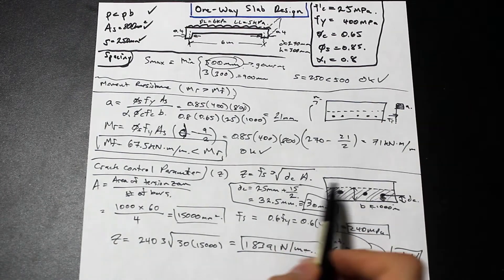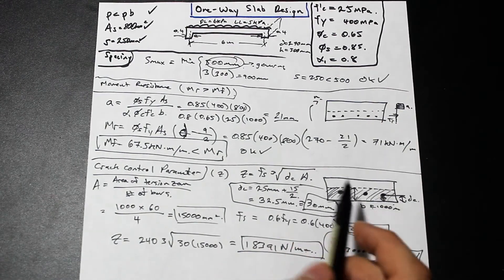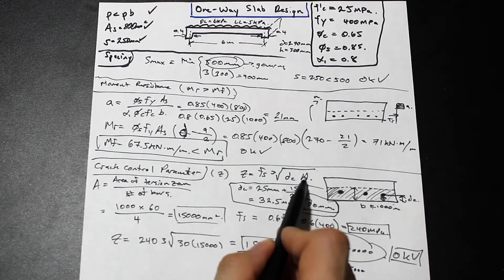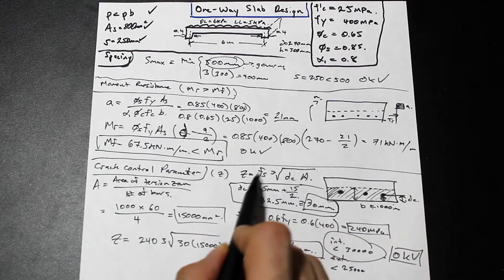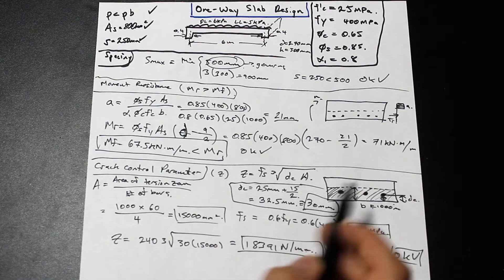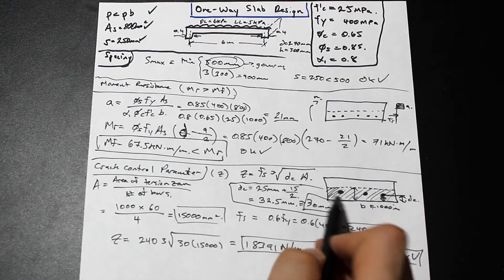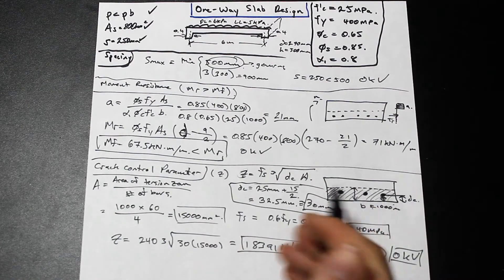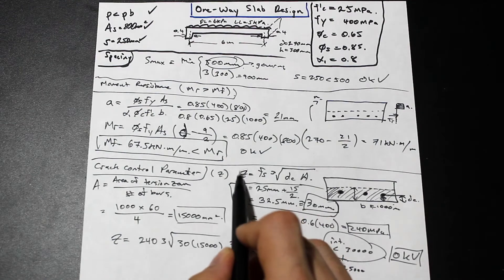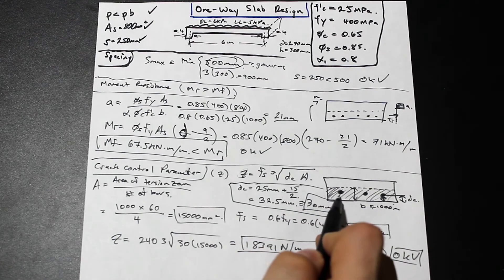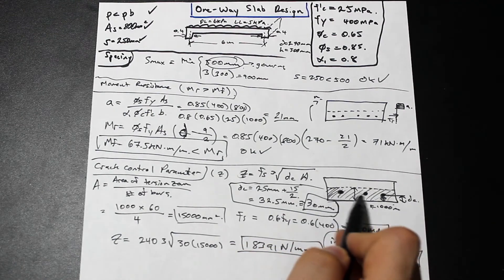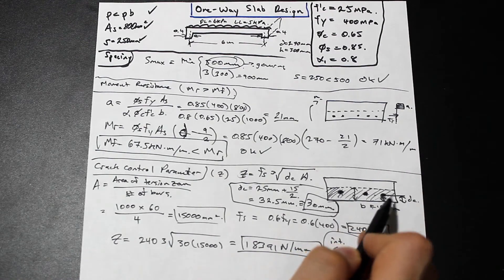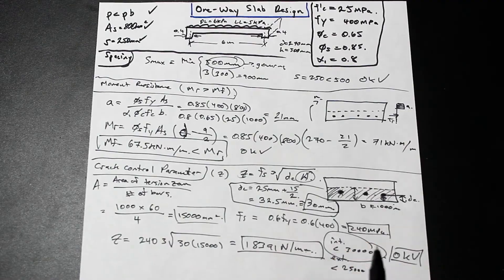Just a quick note, if you're designing and you find that this clause fails, you'll notice that this is heavily influenced by a and dc, whatever's inside the cube root. This doesn't really change, and dc gets larger, which makes this z value get larger as the cover increases. So if you have to provide a large cover, dc is going to get very big, and so will z. What you can do if you're having trouble satisfying this is decrease the diameter of the bar. You'll decrease the spacing, and A will go down. That's just a little hint for you there.